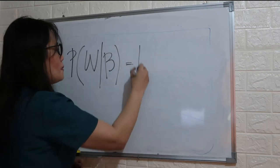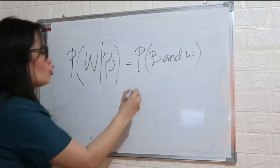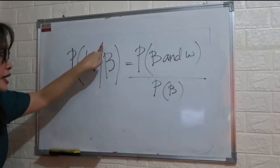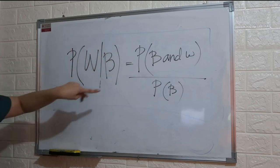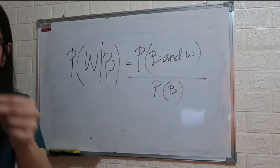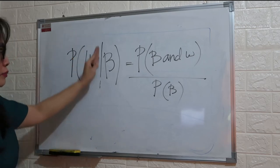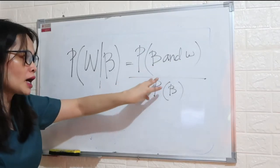To answer that, we use the probability of black and white over the probability of getting the black chip. So the probability of selecting a white chip on the second draw given that the first chip selected was black equals the probability of black and white over the probability of black.